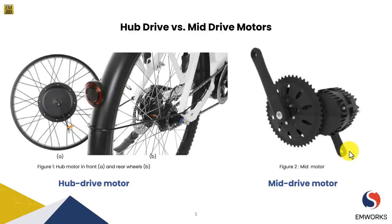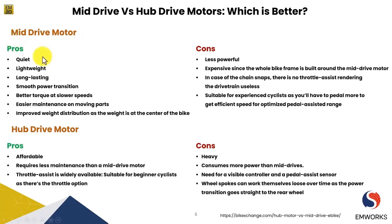Let's look in more detail at the advantages and disadvantages of these drive motors. For the mid drive motor, it's more quiet, lightweight, and long lasting. It provides smoother power transition and better torque at lower speeds. It has easier maintenance on moving parts and improved weight distribution since the weight is at the center of the bike. Its disadvantages are that it is less powerful and expensive, since the whole bike frame is built around the mid drive motor. In the case of chain snaps, there is no throttle assistance, making it completely useless. It is usually suitable for an experienced cyclist, as you need to pedal more to get efficient speed for an optimized pedal-assisted range.